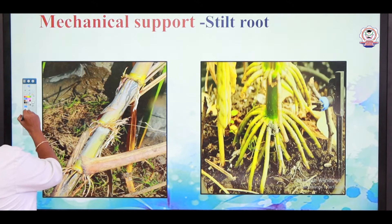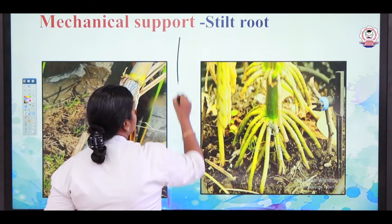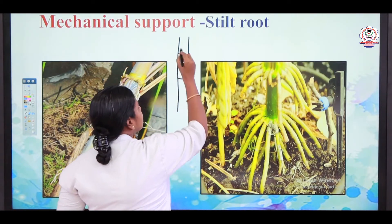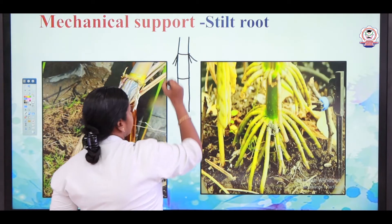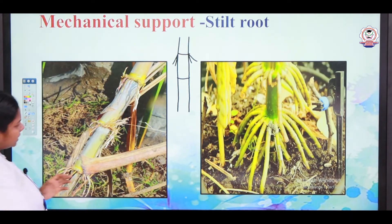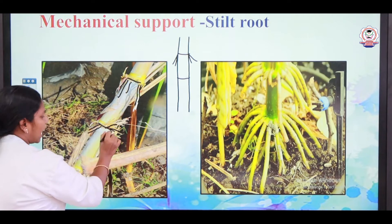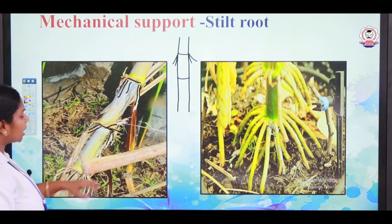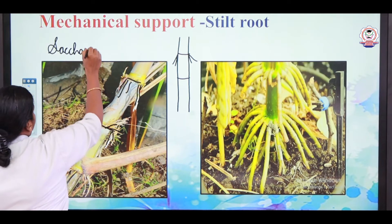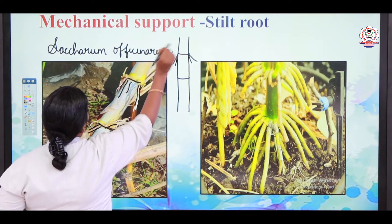Next we are going to see stilt roots. The stilt roots arise from the main stem. If this is a plant or a stem, you can see some roots arising from the nodes and they give additional support to the stem. Stilt roots can be seen in sugarcane. You can see many roots arising from the nodes. The scientific name of sugarcane is Saccharum officinarum.